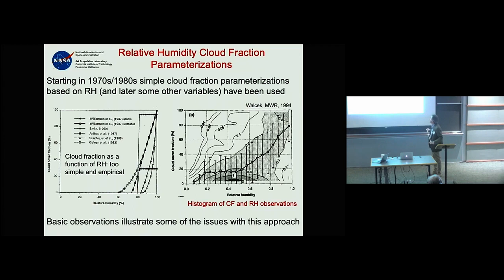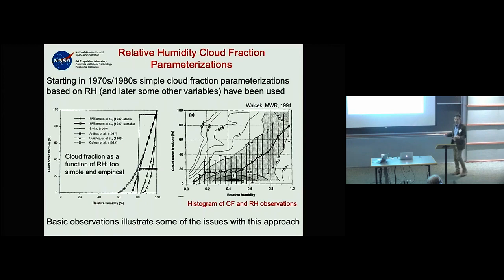The first attempt to calculate cloud cover — if you have a box of 100 by 100 km, the cloud fraction is not going to be 0 or 1, it will be somewhere between — used relative humidity. Starting in the 1960s and 70s, this idea was used and is still used in some models today.